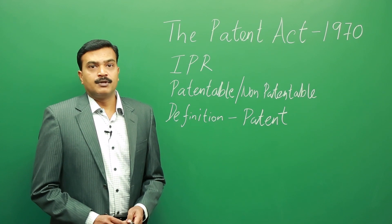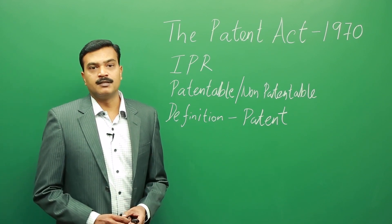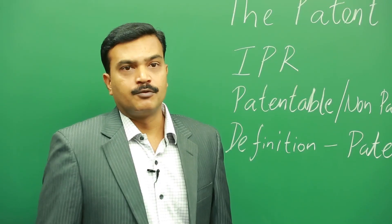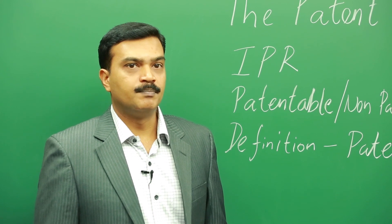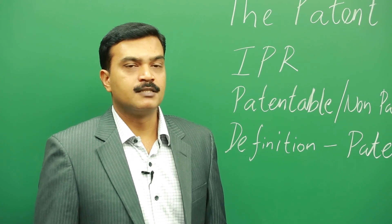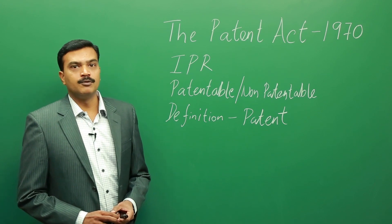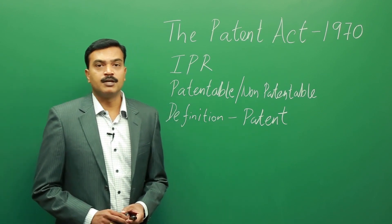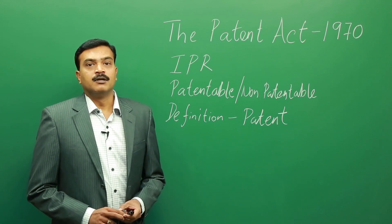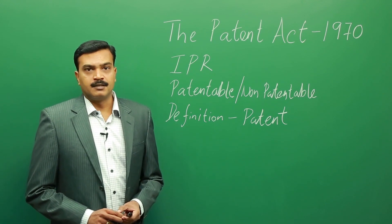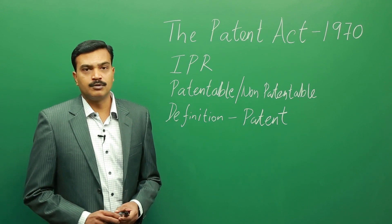Now, looking at the criteria for granting a patent to patentable inventions: the first and foremost criterion that has to be satisfied is novelty. The invention has to be completely new and should not be known to the public prior to the application of the patent. If a person intends to apply for a patent, it should be totally new and not known to the public.